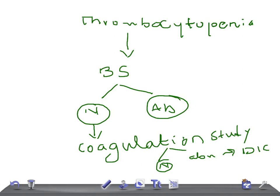If the coagulation studies are normal, then the possibilities could be ITP — immune thrombocytopenic purpura, earlier called idiopathic thrombocytopenic purpura. We also have NAITP, that is neonatal autoimmune thrombocytopenic purpura, and even think of drugs. These are the possible causes for thrombocytopenia with normal blood smear and normal coagulation studies.